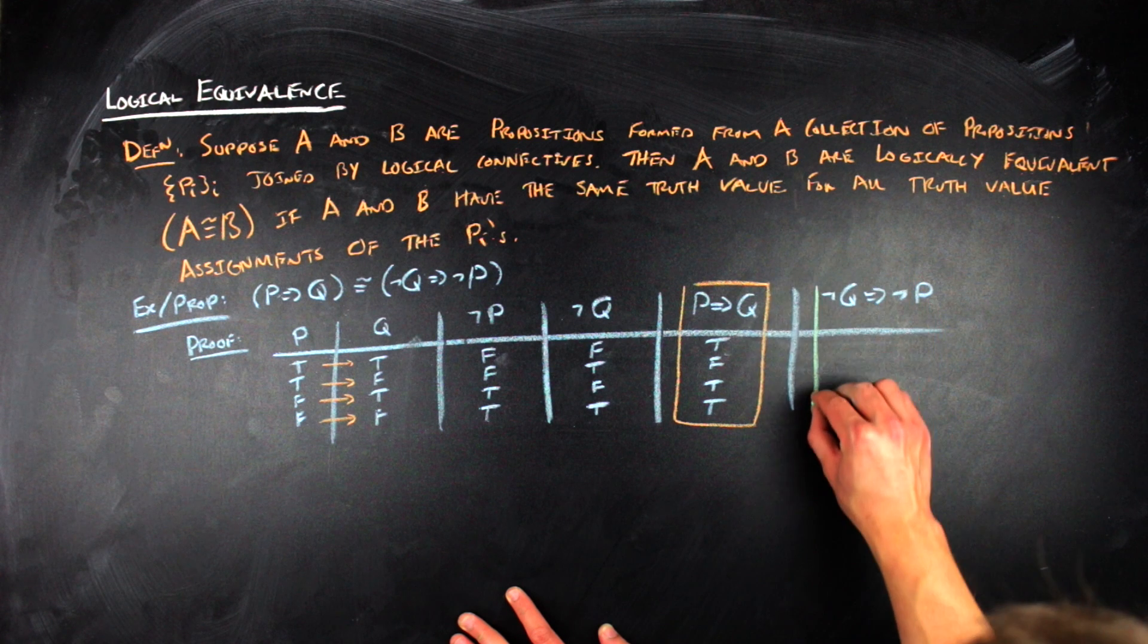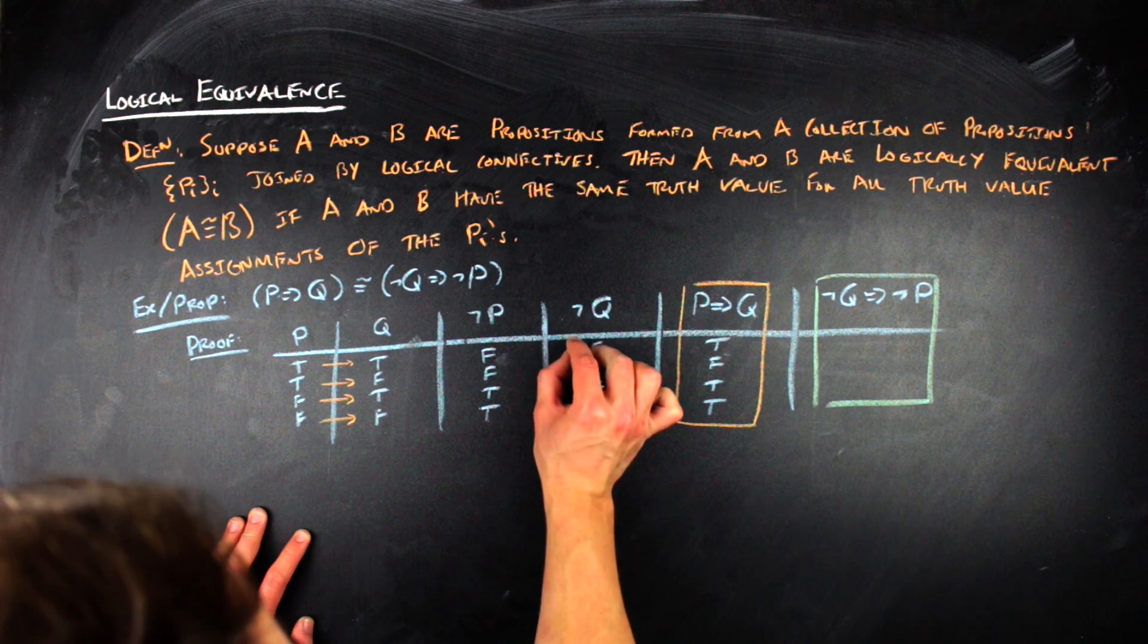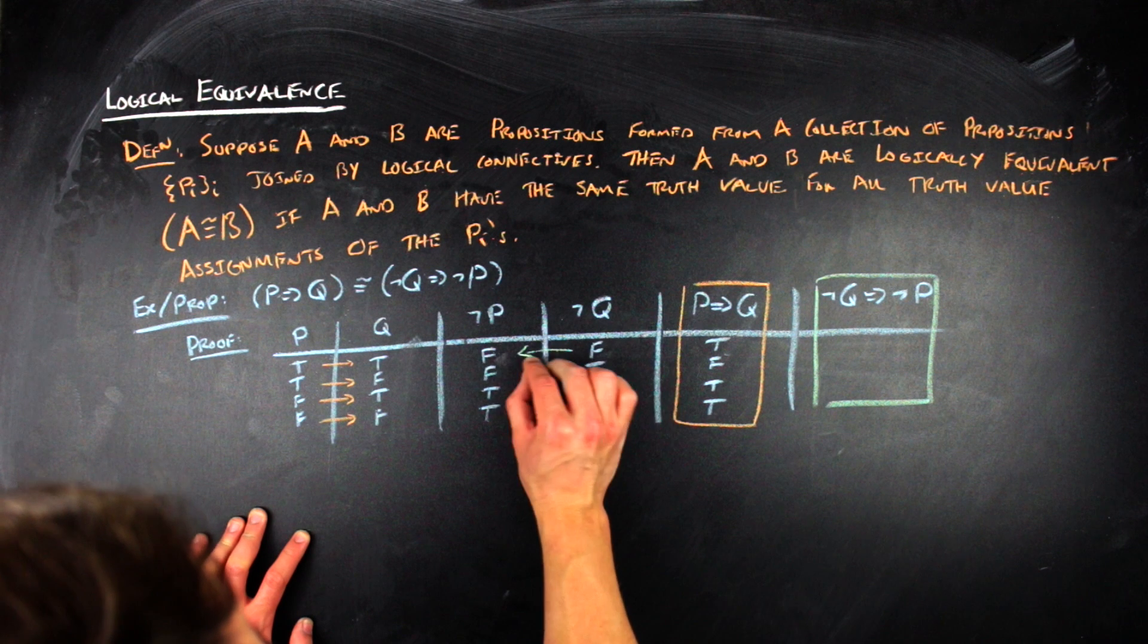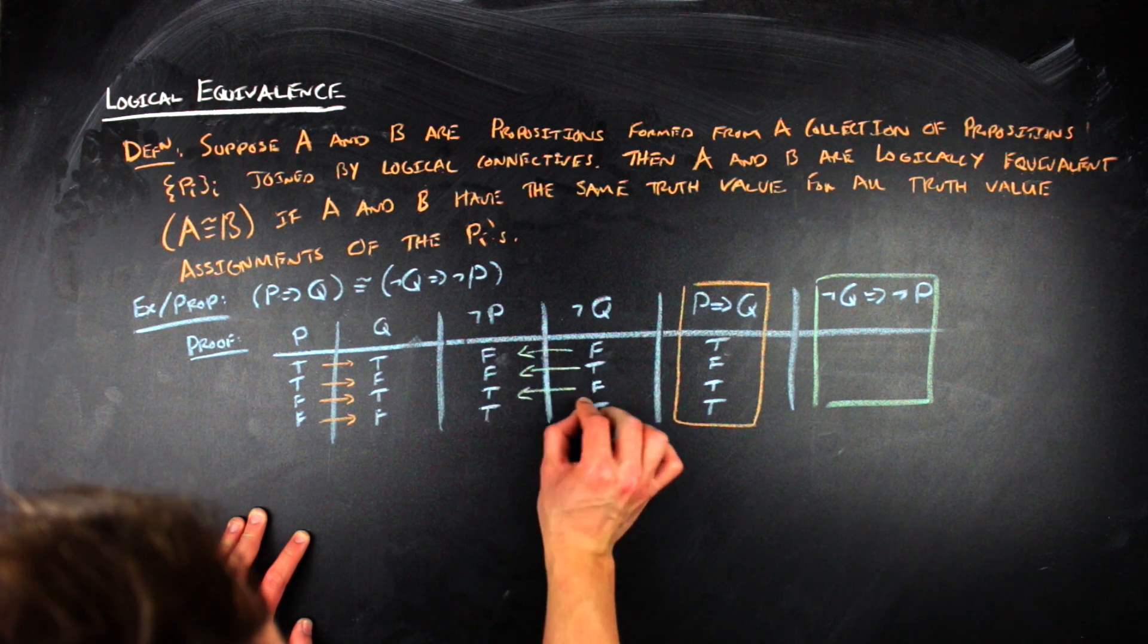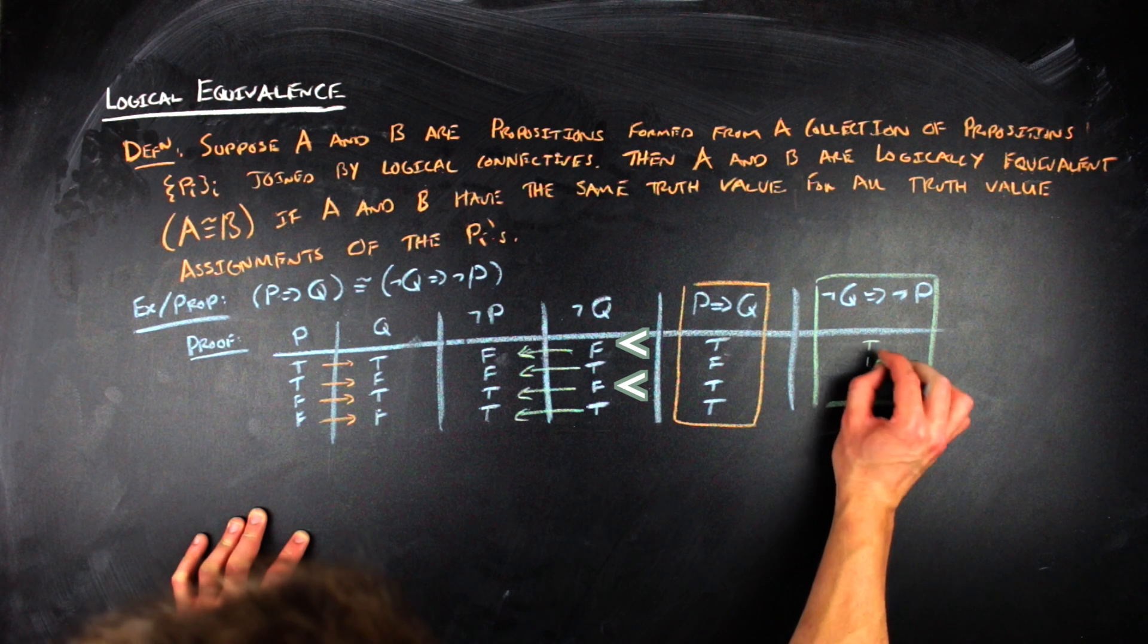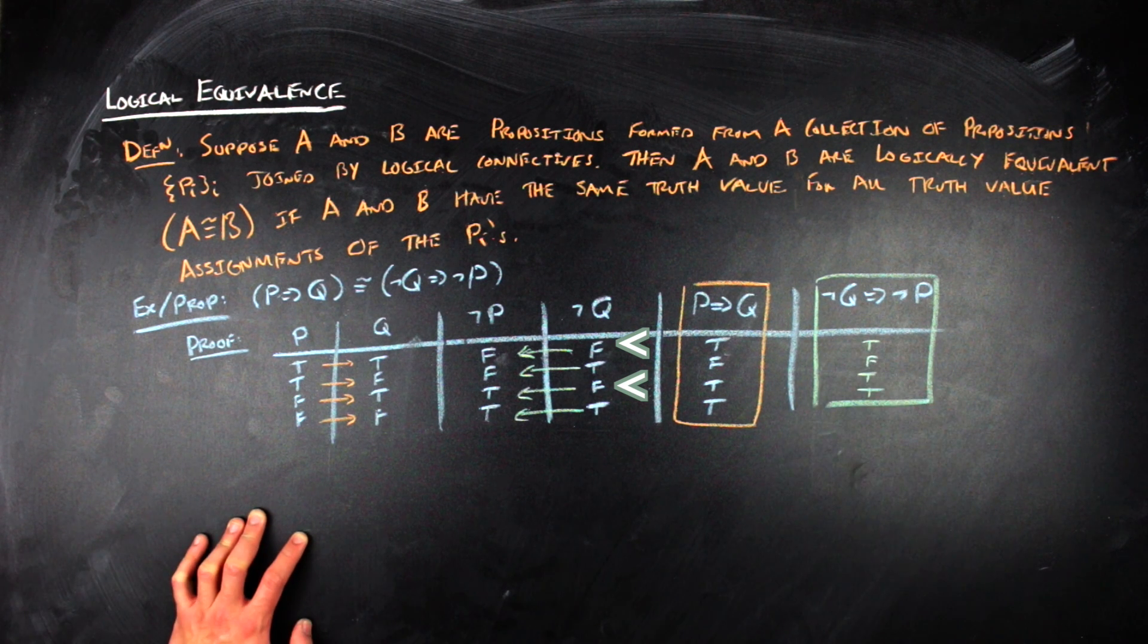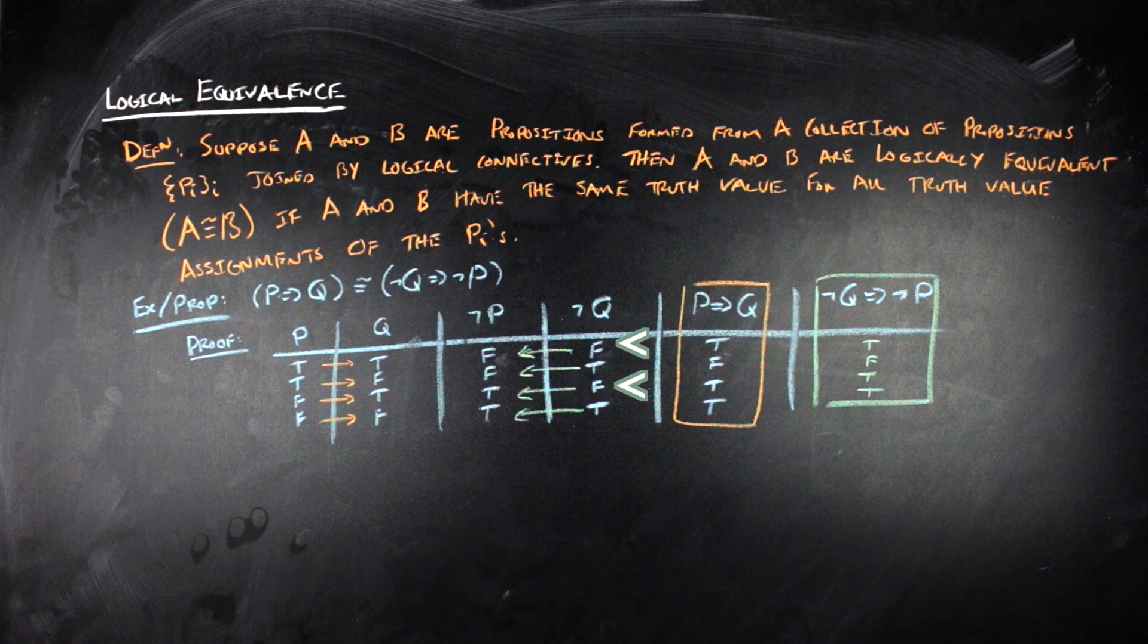So not Q is what we call the hypothesis of the conditional and not P is the conclusion or the consequent in some cases. And in this case, in the first row and in the third row, not Q is false. So by definition of conditional and the truth table for conditional, those two would be the instances of vacuous truth for the conditional not Q implies not P.